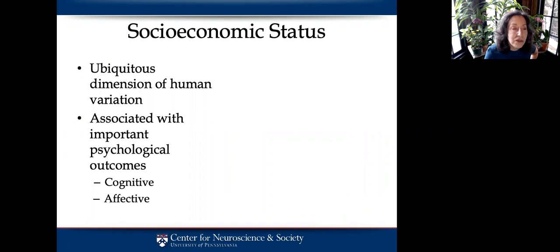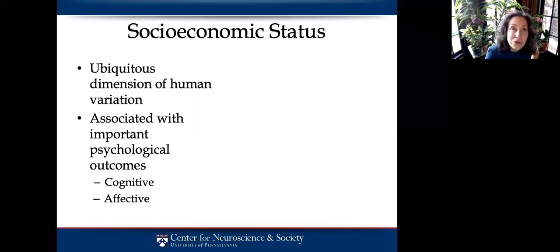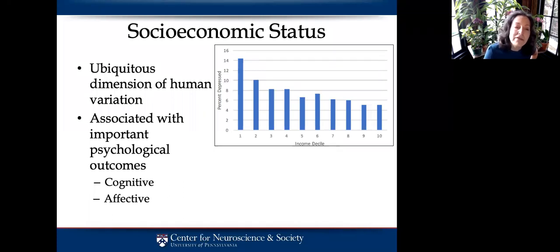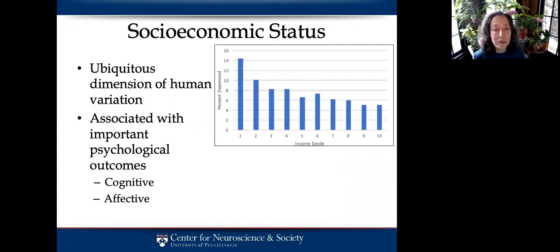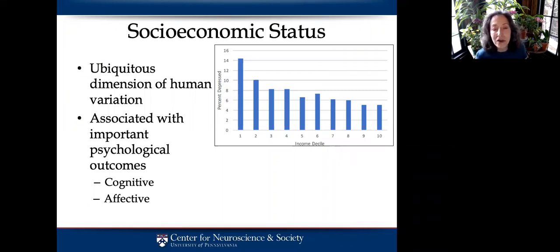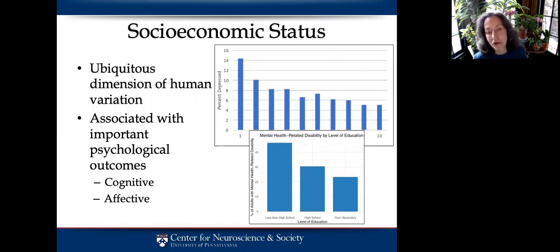What's gotten less attention is the relation of SES to affective well-being. But let me show you that these relations are just as strong and therefore just as important to understand. This is a graph of the percentage of people who in the last year have met criteria for major depressive disorder. This is based on a survey done in Ontario, Canada. A rather shocking 14% of people in the lowest income decile have symptoms of depression.